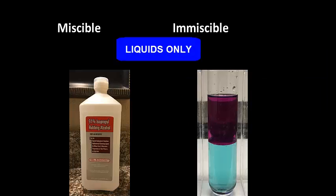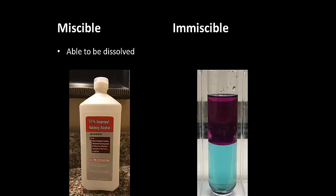The terms miscible and immiscible refer only to liquid-liquid solutions. Miscible liquids are able to dissolve freely in one another in any proportion. An example of this is rubbing alcohol, which is composed of water and isopropyl alcohol, both liquids.